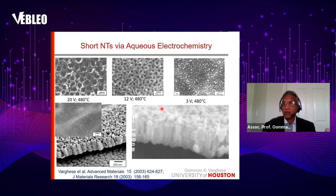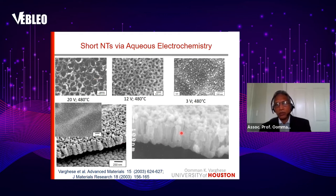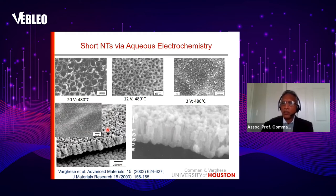The anodization voltage has a critical effect on nanotube formation and structure. We can see that at 3 volts, we don't get nanotubes but instead a nanoporous structure. Above 10 volts, we see distinct nanotubular architectures with diameters increasing with voltage. At a higher voltage of about 25 volts, the nanotubes become very spongy and irregular. These cross-sectional images show the titanium dioxide nanotubes are uniform over a very large area. Depending on the size of the electrode and electrolyte bath, we can scale up to any extent.